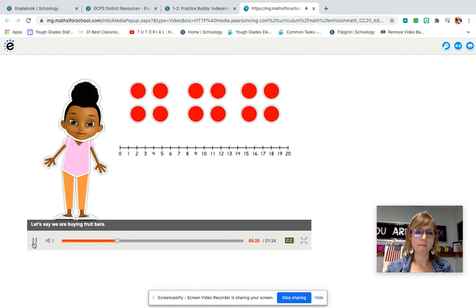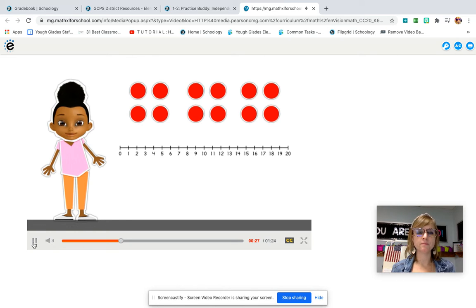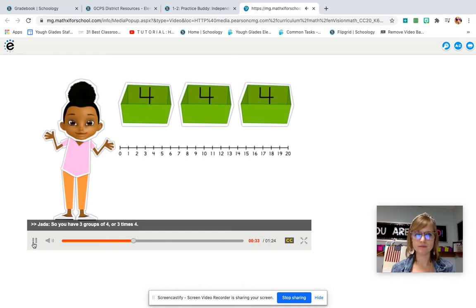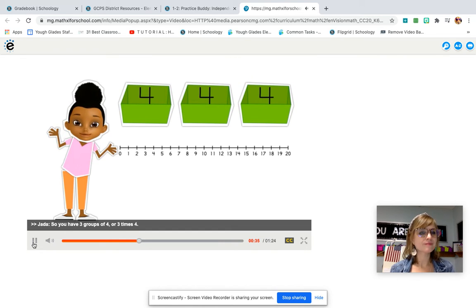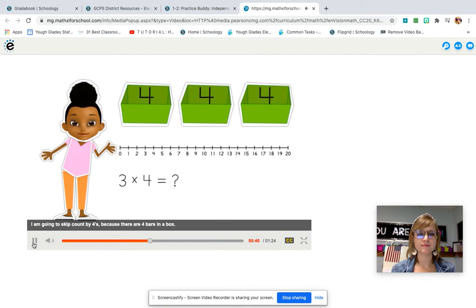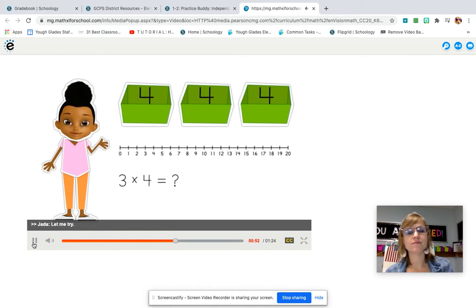Let's say we are buying fruit bars. Each box has four fruit bars, and I buy three boxes. So you have three groups of four, or three times four. Right, so then we can demonstrate that on the number line. I am going to skip count by fours, because there are four bars in a box. I am going to skip count three times, once for each box that I bought.